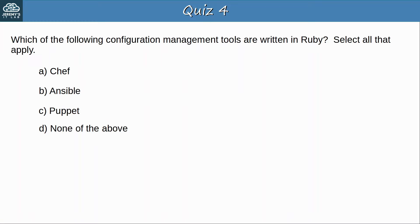Question 4: Which of the following configuration management tools are written in Ruby? Select all that apply. The answers are A, Chef, and C, Puppet. Both of these tools are written in Ruby, whereas Ansible is written in Python.